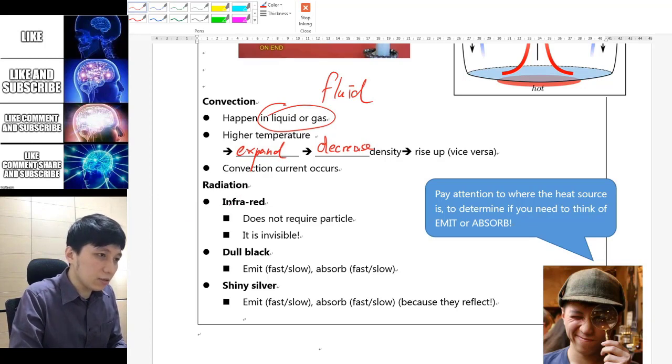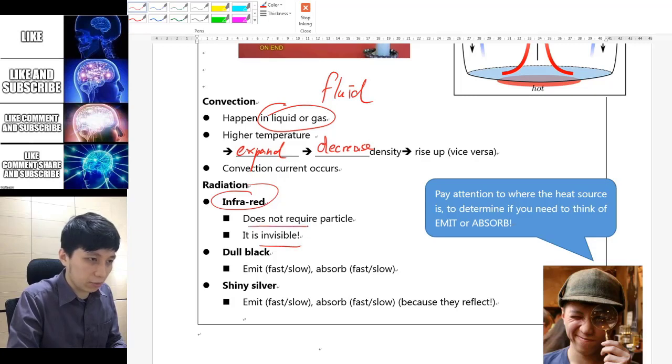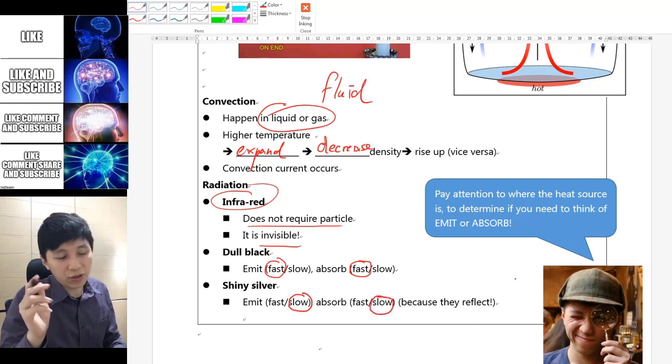For radiation, we are mainly talking about infrared when we talk about heat transfer methods. They are invisible, they do not require particles. For dull black, they will emit fast and absorb fast, like the rule of thumb that we talked about earlier. For shiny silver, they will emit slowly and absorb slowly because they would reflect the radiation a lot.